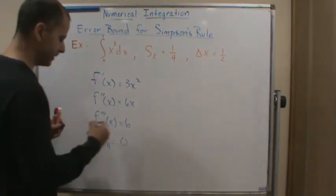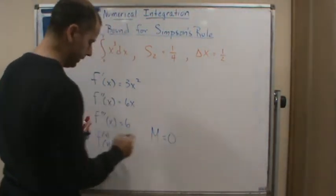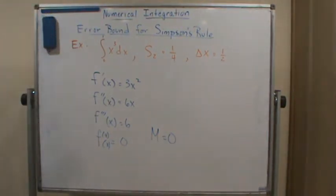Which means that M is 0. The maximum value that this function has over the interval is 0.